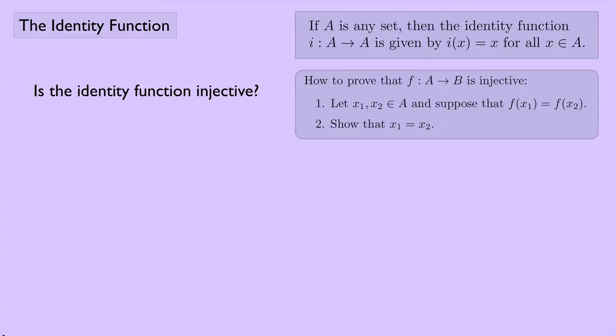Here's how you prove that something is injective. Let's try and prove it. So here's our proof. We'll start off by saying we're going to let i, the identity function, be given by i of x equals x. I'm just stating that because it's the definition of the identity function, and I'll probably want to use it in the proof.